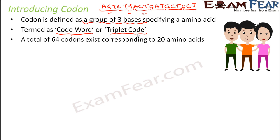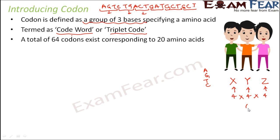A total of 64 codons exist, which correspond to 20 amino acids. Let us see how 64 codons exist. A codon is a group of three bases, so let us denote the three bases as X, Y, Z. The first position can be taken up by any of the four bases — A, G, T, C. Similarly, the second and third positions can also each be taken by any of these four bases. So the total number of possibilities is four times four times four, that is 64 possibilities.